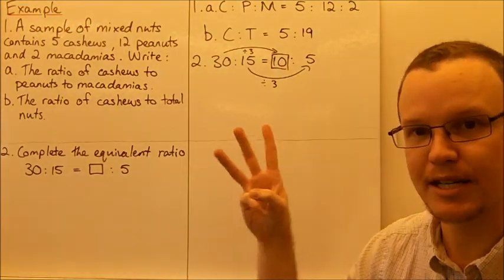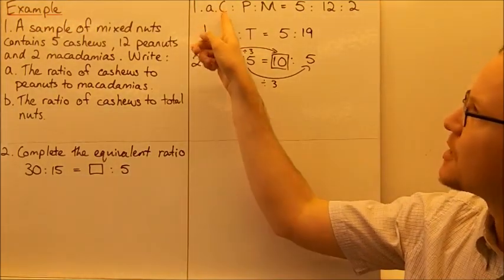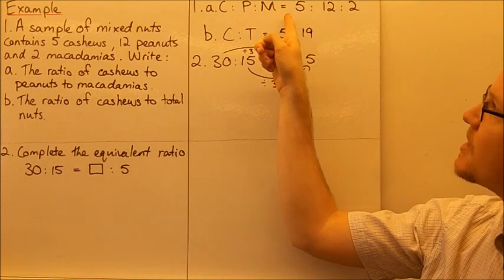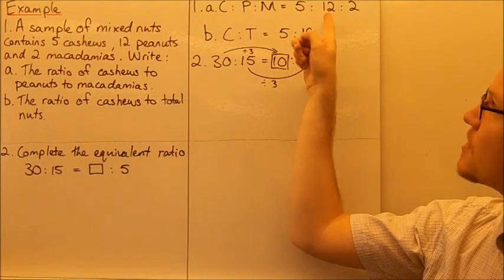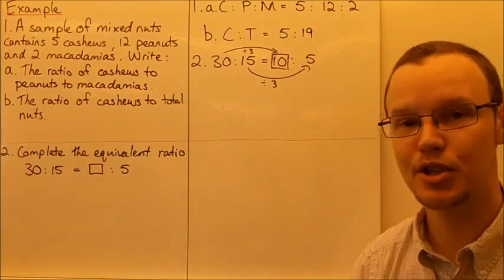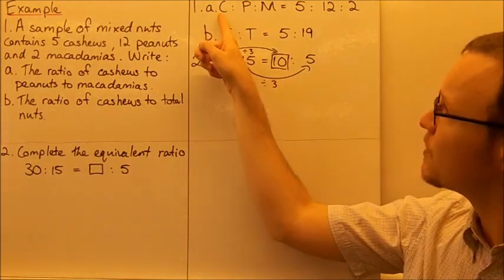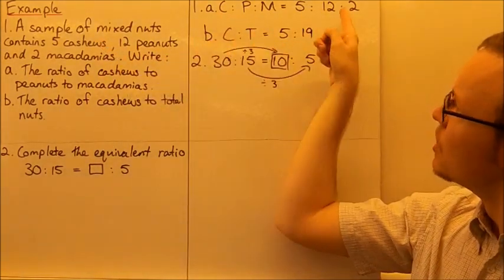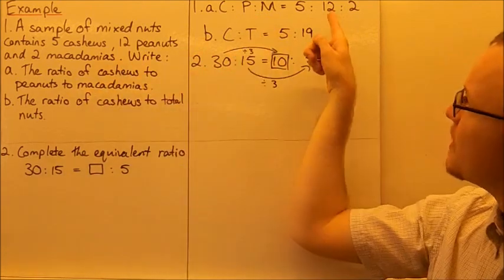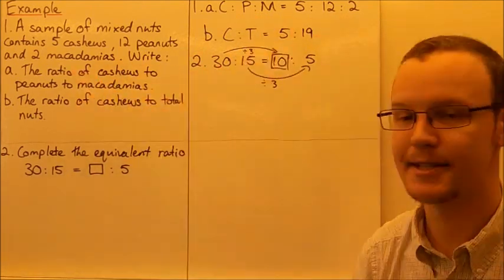So here we've got three quantities, three different types of nuts. So cashews to peanuts to macadamias equals 5:12:2. So you can see we've got five cashews, twelve peanuts and two macadamia nuts.